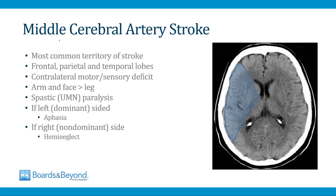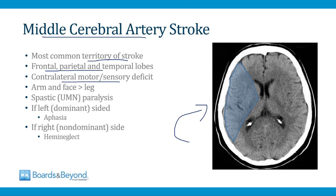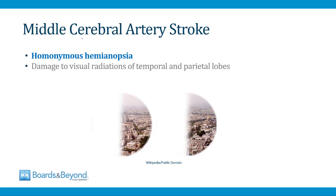The first major cortical stroke syndrome is a middle cerebral artery territory stroke — the most common territory of stroke. It involves portions of the frontal, parietal, and temporal lobes. MCA strokes lead to contralateral motor and sensory loss, with the arm and face affected more than the leg due to the homunculus. The paralysis is a spastic upper motor neuron type. If the stroke is on the dominant left side, it causes aphasia; if on the non-dominant right side, it causes hemi-neglect. Patients can also develop homonymous hemianopsia.